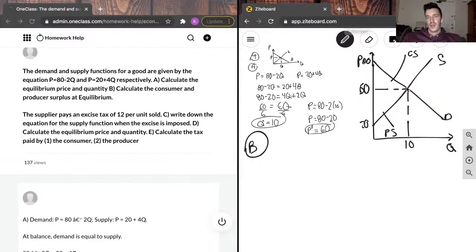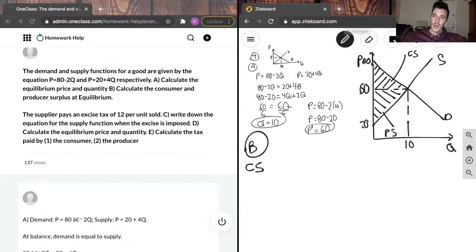So, we know that the consumer surplus is this area, right? This area in here. And the producer surplus is going to be this area in here. So, we can do the consumer surplus first. So, this is a triangle, obviously. So, the height of the triangle is going to be from this point to this point. Or 80 minus 60. That's the height.